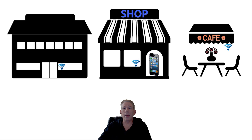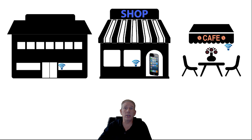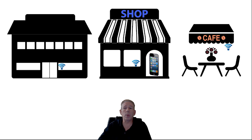Devices can connect to any member network and then roam to any other member network if they're close enough — just as if they were in an enterprise roaming from access point to access point, or roaming between LTE tower to LTE tower across a cellular network.